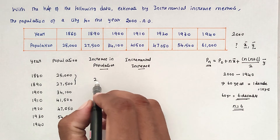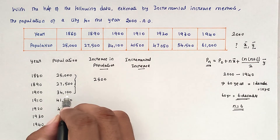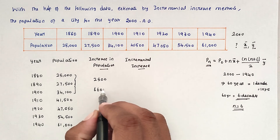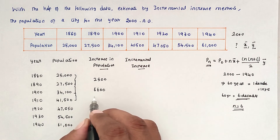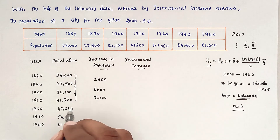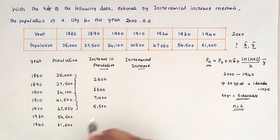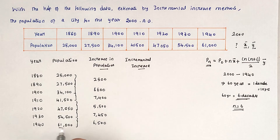Now calculating the increase in population each decade: 27,500 − 25,000 = 2,500; 34,100 − 27,500 = 6,600; 41,500 − 34,100 = 7,400; 47,050 − 41,500 = 5,550; 54,500 − 47,050 = 7,450; and 61,000 − 54,500 = 6,500.